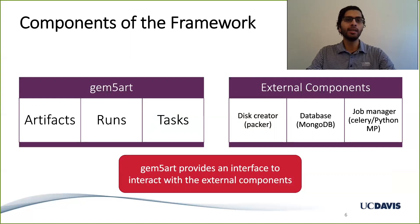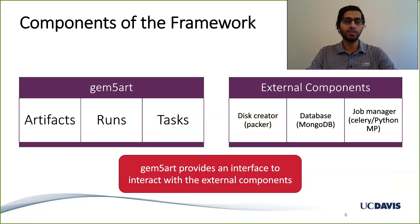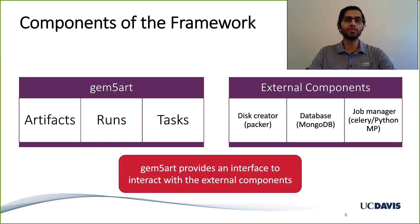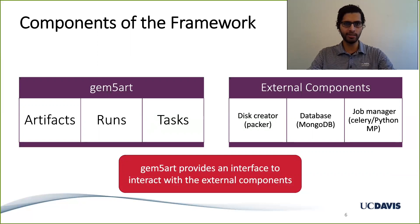Gem5Art runs are objects which contain all the information necessary to run any Gem5Art job. Tasks are the actual jobs which execute whatever was defined by Gem5Art run objects. Gem5Art also interacts with external components including a disk creator — we use Packer for this — which automatically creates a disk image once a template file is given. For a database we use MongoDB, and Gem5Art relies on a job scheduler which could be as complicated as Celery or as simple as the Python multiprocessing library.